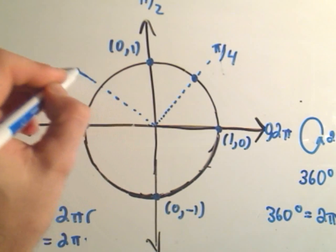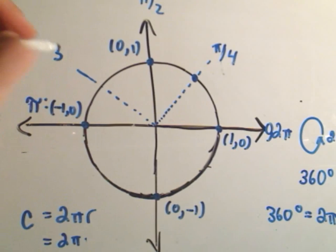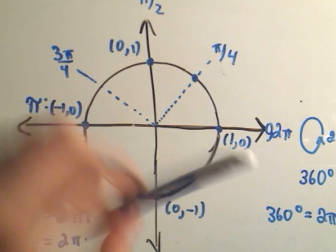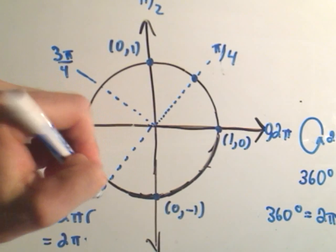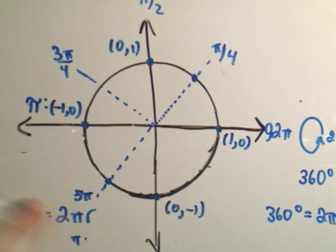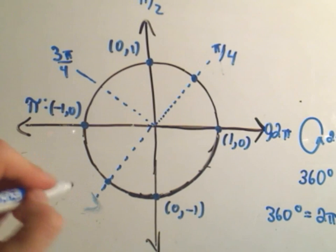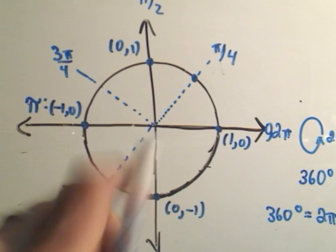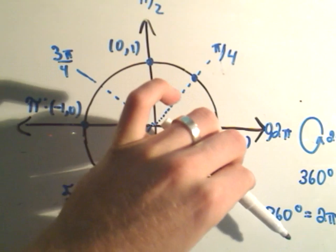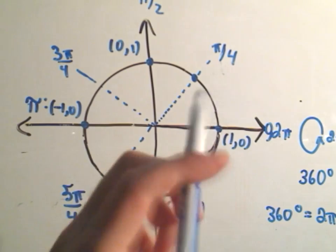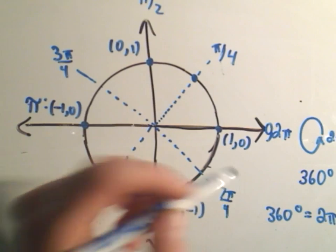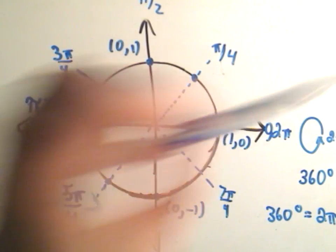Continuing around: 3π/4, then 4π/4 which is π. Down in the bottom left we get 5π/4. Then 6π/4 which is 3π/2, then 7π/4, and after that we're back at 8π/4, or 2π.